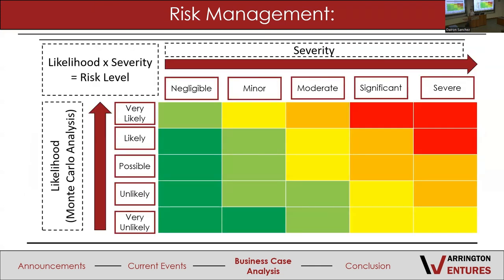Risk management requires looking at both likelihood — the probability of a risk, which can be assessed through Monte Carlo analysis — and severity, how much money you'd lose if that risk actually happens. You quantify risk level by multiplying likelihood by severity. If a risk is very likely and very severe, you need the strongest mitigation. If it's very unlikely and won't significantly affect your revenue or profit, it's less of a concern — maybe put something small in to mitigate it, but it won't affect you in the long term.